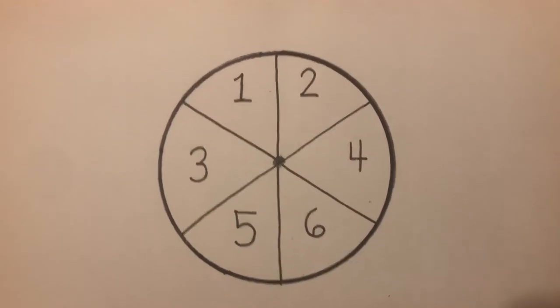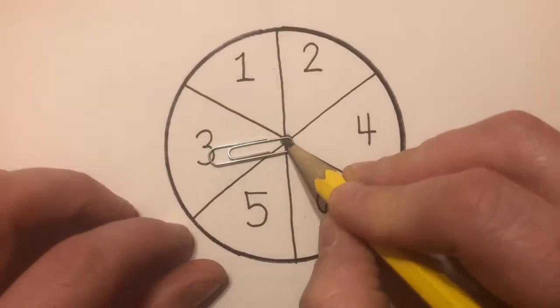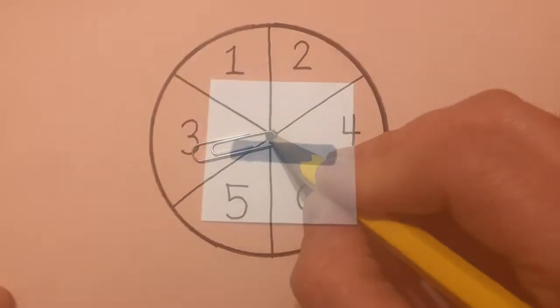So, to use your number spinner, you just take your spinner, a pencil, and a paper clip, and you flick your paper clip, and that's how you'd pick your number.